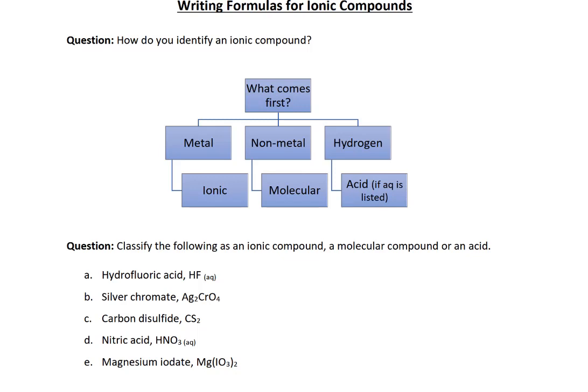So first we look at letter A. We're classifying these as an ionic compound, a molecular compound, or an acid. So when you see an H you come over to your flow chart, you ask what comes first. Hydrogen does, and then it's going to be an acid if Aq is listed because Aq means dissolved in water and that's what an acid is. So this one will be an acid.